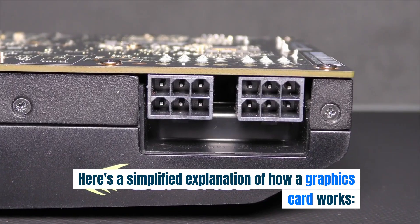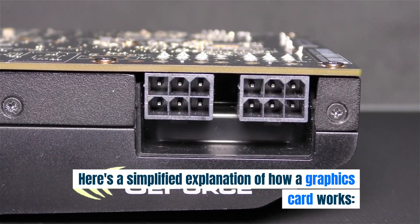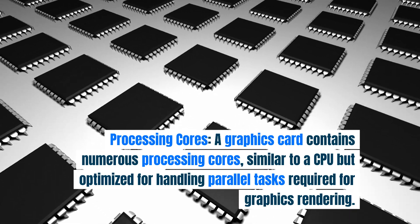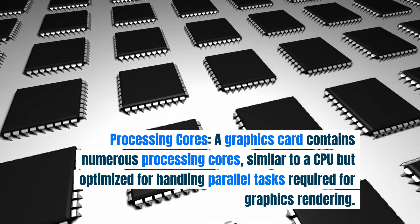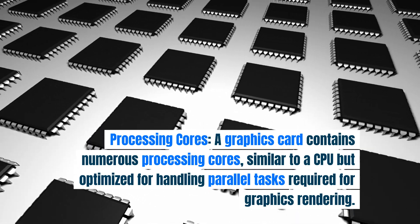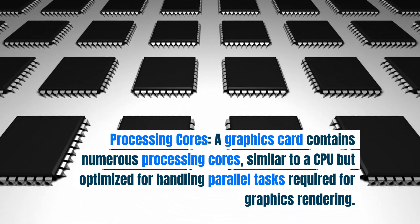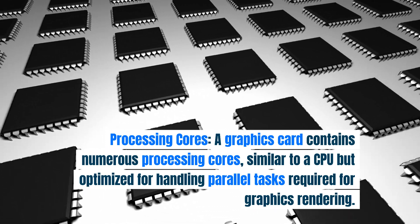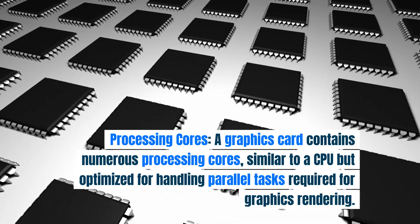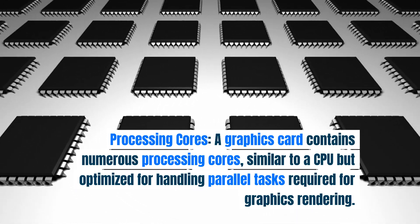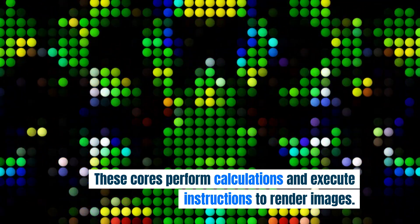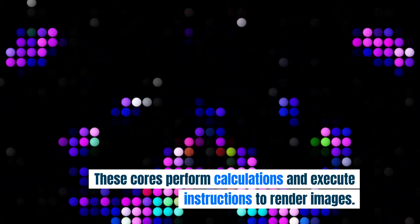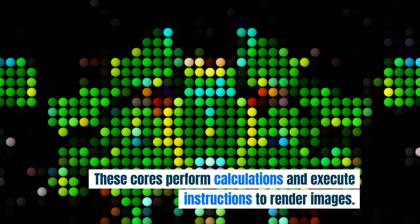Here's a simplified explanation of how a graphics card works. Processing cores: a graphics card contains numerous processing cores, similar to a CPU, but optimized for handling parallel tasks required for graphics rendering. These cores perform calculations and execute instructions to render images.